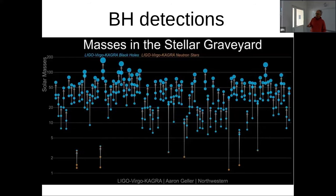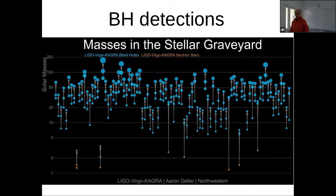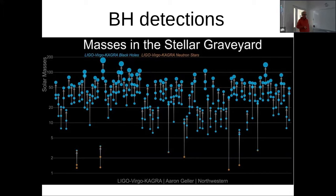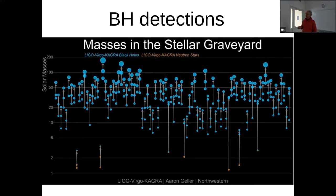We can start with an individual masses plot. These are the objects we see in gravitational waves. For each merger, you see a line showing one component, another component, and the final component. The final component mass is slightly less than the sum because energy is emitted in gravitational waves. The bulk of the sources has masses in the range of about 15 to 50 solar masses, which is higher than typical black hole masses of 5 to 10 solar masses seen in X-ray binaries. The question is whether this is a selection effect or a different population.